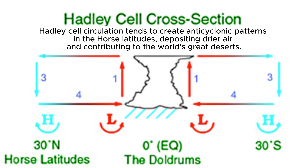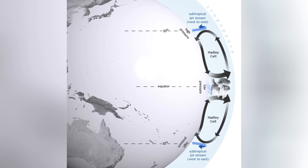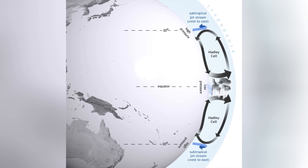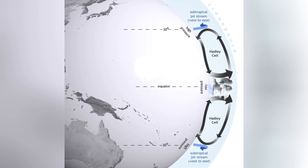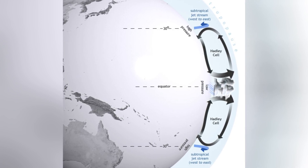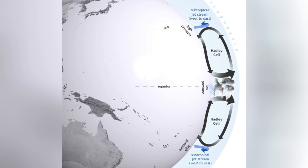However, as this air moves poleward, it descends over subtropical regions, becoming dry and compressed, creating high-pressure zones. These high-pressure areas suppress cloud formation and precipitation, resulting in clear skies and minimal rainfall, which are ideal conditions for deserts to form.